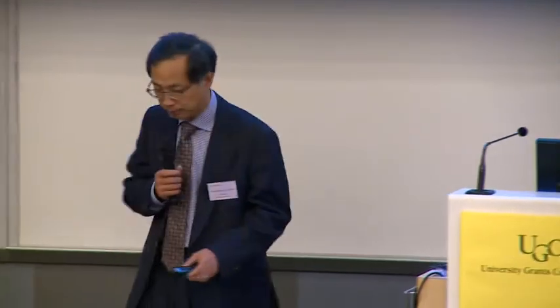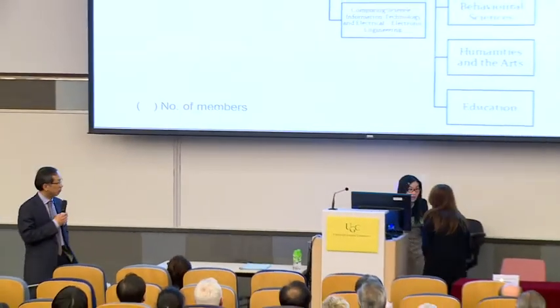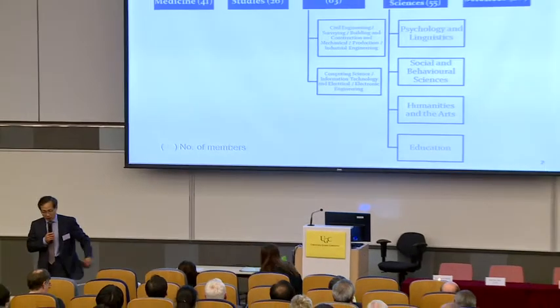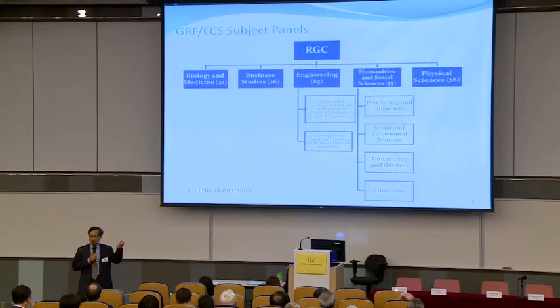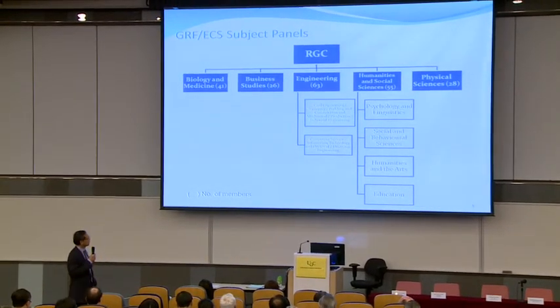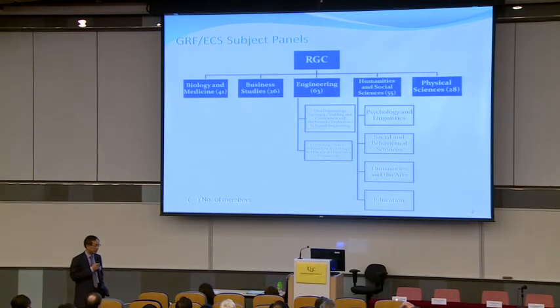How does this work in practice? It begins by having each application routed to one of the five subject panels within the RGC. Professor Wah has already explained the structure of these five area panels: biology and medicine, business studies, engineering, humanities and social sciences, and physical sciences. Some of these, particularly engineering and humanities, are further broken down into sub-panels.